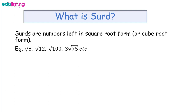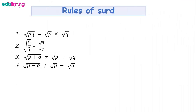Before you know how to solve surd-related problems very well, you have to take note of some rules. We have four very important rules. The first one is: if p is multiplying q under the same root, it is allowed for you to separate the two — give each one its own root — and they remain multiplying.